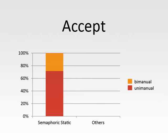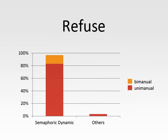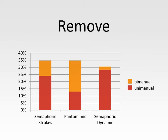Accepting is only performed by semaphoric static gestures. While refusing is mostly done using semaphoric dynamic gestures. Removing is only accomplished by semaphoric strokes, pantomimic acting, and semaphoric dynamic gestures.